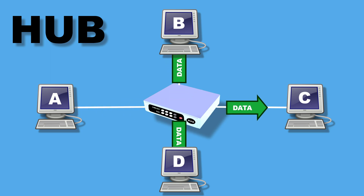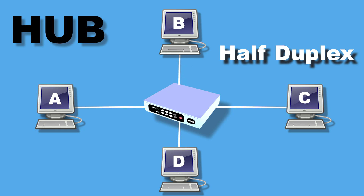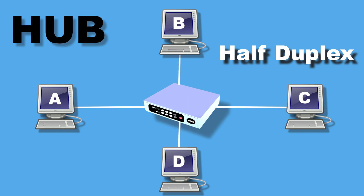Also remember, the transmission mode of hub is half duplex, meaning devices can't send and receive data at the same time. If two PCs send data at the same time, it creates a data collision, which will cause your data to become corrupted and need to be sent again.